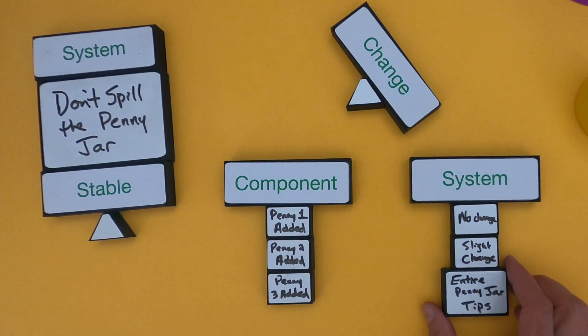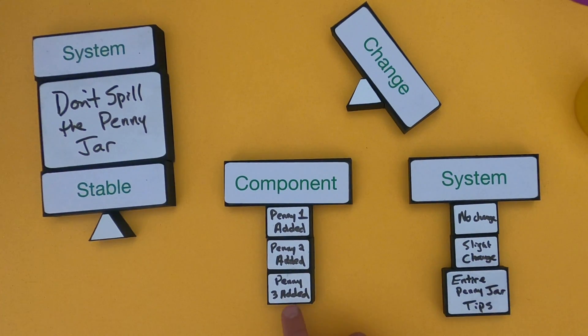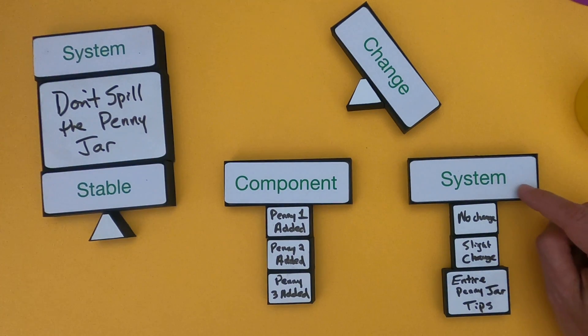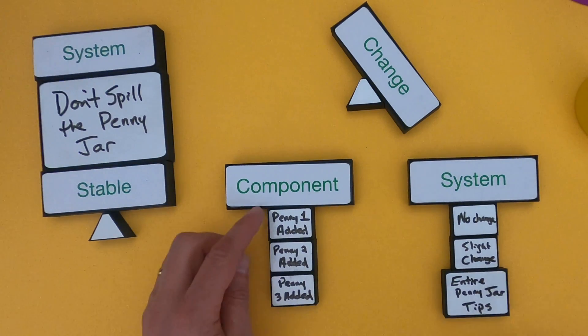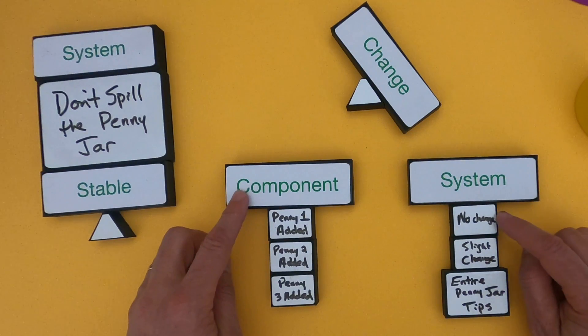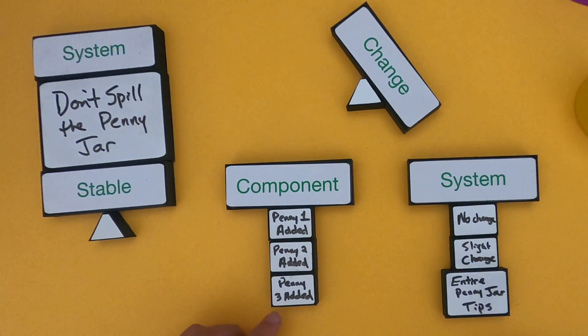When we added penny three, then we got a big change in the system. I'm just showing this on a bigger box or block. When penny three was added, then the entire penny jar tips over. I'm putting this under system because that jar didn't only contain one penny - it contained all the pennies that it had before as well as all the parts of the system. What I'm trying to show is that you can have small changes in a component of a system that lead to small change in the system. But occasionally, you can have small change in one part of the system that leads to massive change in the overall system.